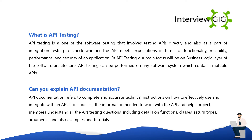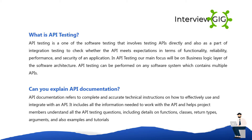Can you explain API documentation? API documentation refers to complete and accurate technical instructions on how to effectively use and integrate with an API. It includes all the information needed to work with the API and helps project members understand API testing, including details on functions, classes, return types, arguments, and also examples and tutorials.